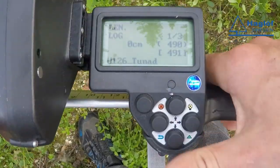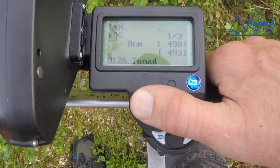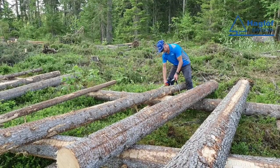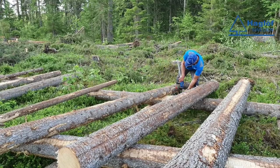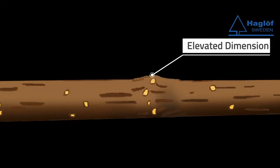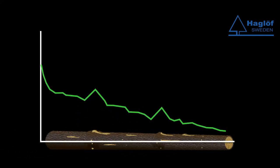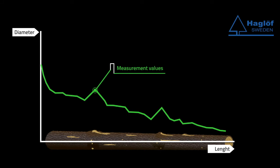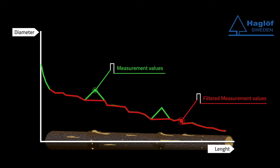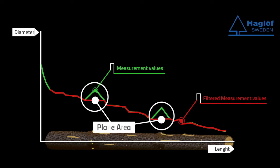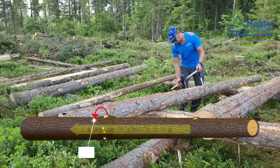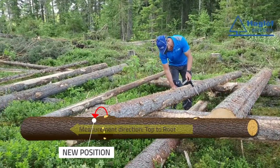The length is registered with the push of the enter button on the caliper. The harvester computer's filtering allows no elevated dimensions in the direction from the root end up to the top, but adjusts the stem profile to a straight line between the point where the stem diameter begins to rise until the diameter is back to the starting level again. This line is called a plain area. If control measurement is done at an elevated point, the harvester computer's filtered measurement values and the control measured value will differ, sometimes markedly. Neither is the top diameter measured at an elevated dimension.